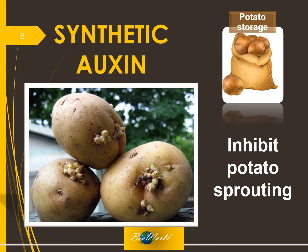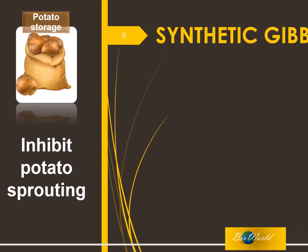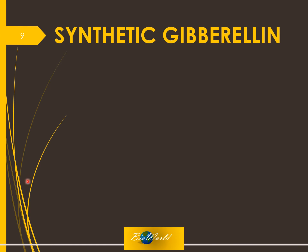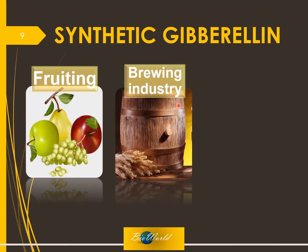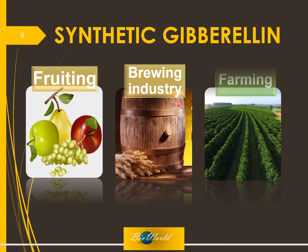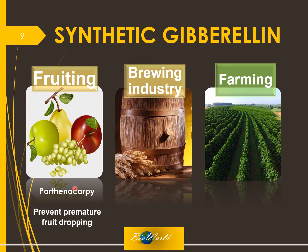Now let's move on to synthetic gibberellin. It is used in three industries: firstly for fruiting, secondly in the brewing industry, and thirdly in farming. Fruiting is similar to auxin — involving parthenocarpy and preventing premature fruit dropping — since gibberellin shares the same characteristics as auxin in keeping the plant young. The brewing industry is specific to gibberellin, and farming is a special case which I will explain after.